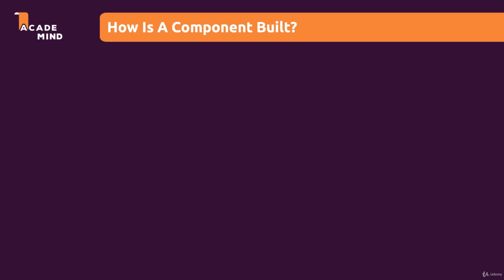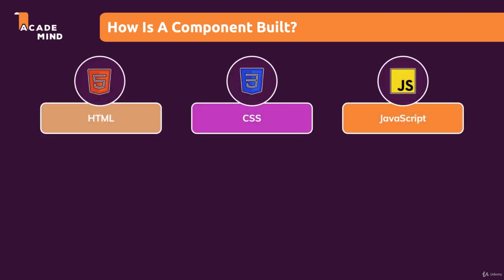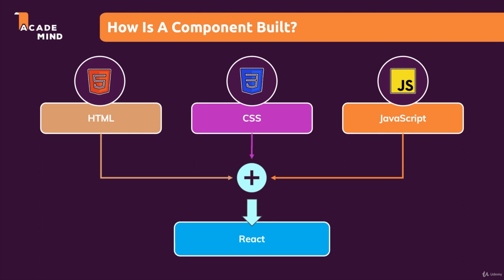We'll dive into the concrete code in just a second. In general, it's important to keep in mind what I mentioned earlier. User interfaces are about HTML, CSS, and JavaScript, and therefore all these components are about combining HTML, CSS, and JavaScript. When we work with React and we build components, we do just that — we combine HTML, CSS, and JavaScript in all these components, and then we combine all these components together to build the entire user interface.